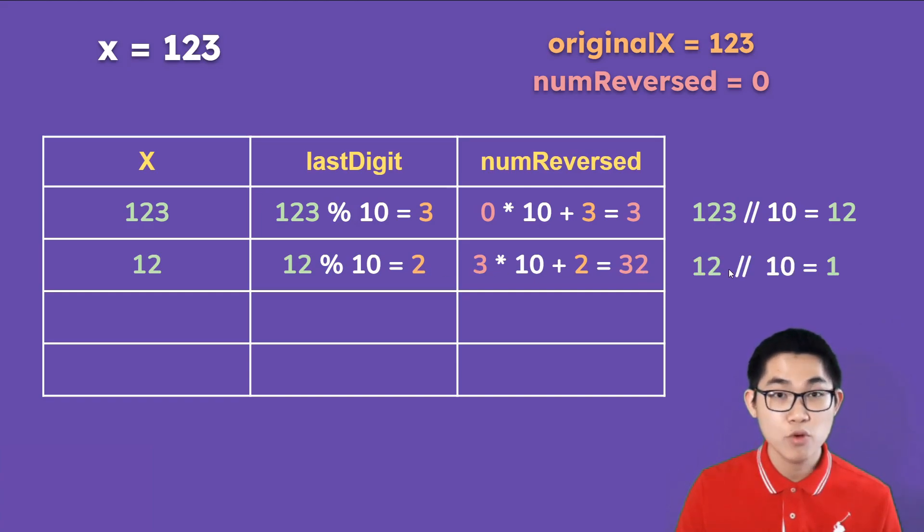And then we get rid of the last digit. So we floor divide 10, we get 1. Again, we put 1 here. We get the last digit, that's also 1. And then we get num reverse, which is 32 times 10 plus the last digit 1, and that's going to give you 321.